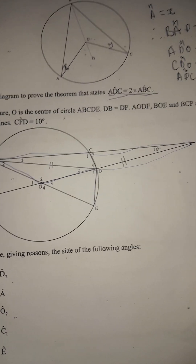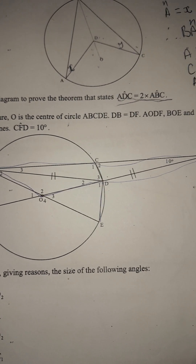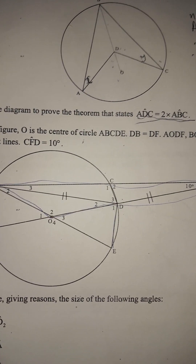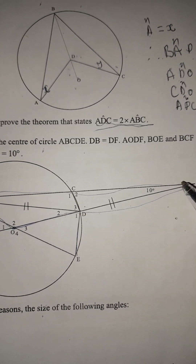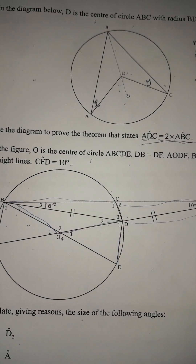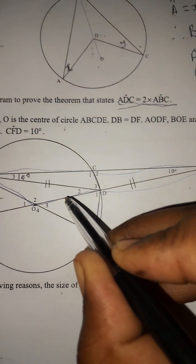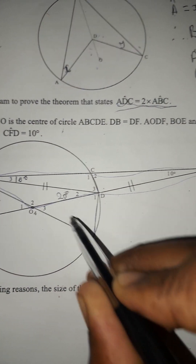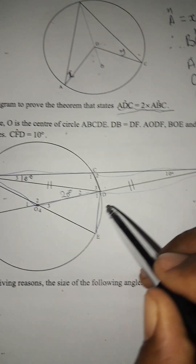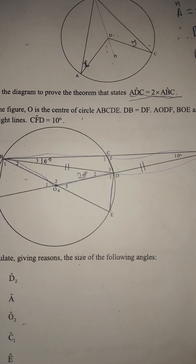In the figure below, O is the center of circle ABCDE, such that DB equals DF. Since DF equals DB, the angle here is also 10 degrees. We are looking for D2: since it is an exterior angle of triangle BDF, angle D2 will be 20 degrees.